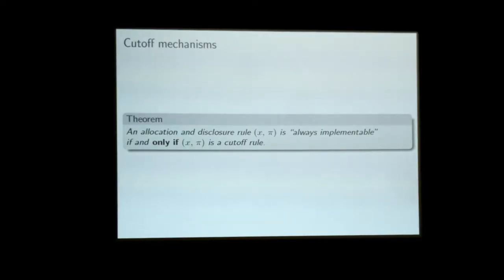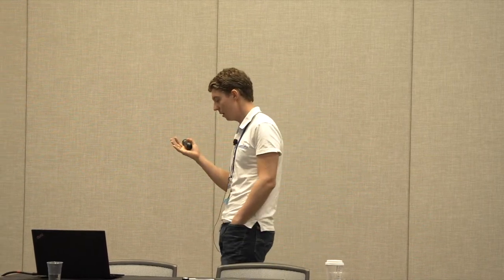You might think this is a restrictive class and there must be lots of other truthful mechanisms — and yes, there are — but none of those other mechanisms are actually robustly truthful. It turns out that if you take an allocation disclosure rule and want it to be always implementable, it actually has to be a cutoff rule. If you disclose information beyond information about the cutoff, then at least sometimes, for some distributions and aftermarkets, this cannot be a truthful mechanism. So this first result can be interpreted as saying that cutoff mechanisms are essentially the class defined by being implementable in the worst case.